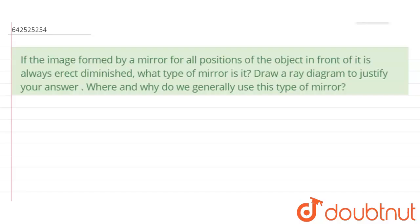If the image formed by a mirror for all positions of the object in front of it is always erect and diminished, what type of mirror is it? Draw a ray diagram to justify your answer. Where and why do we generally use this type of mirror?